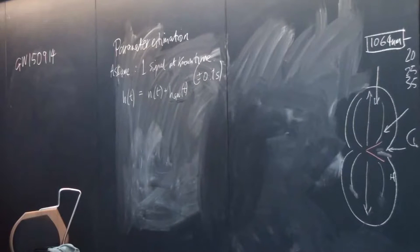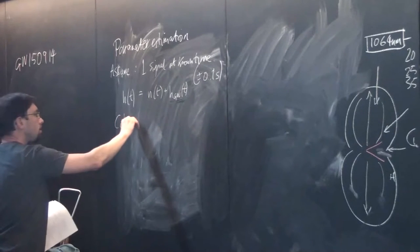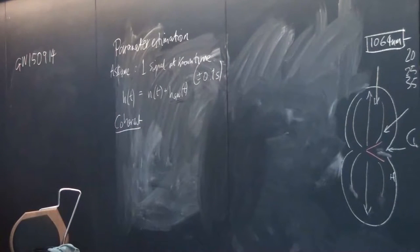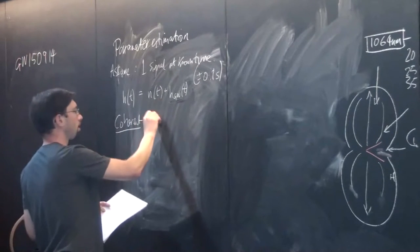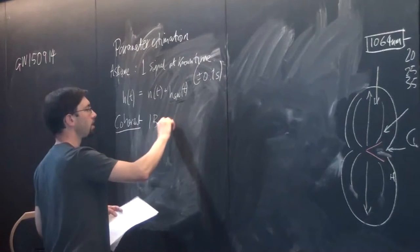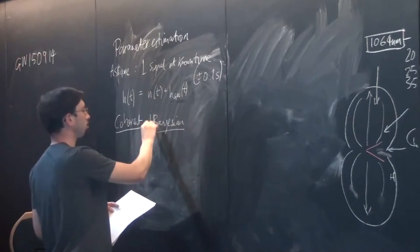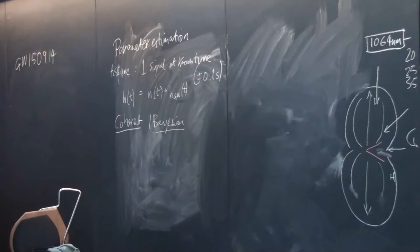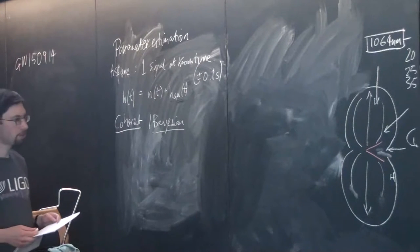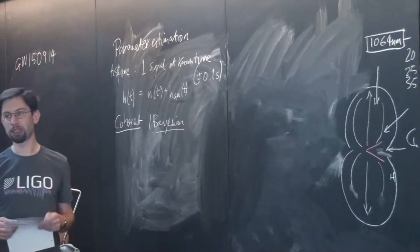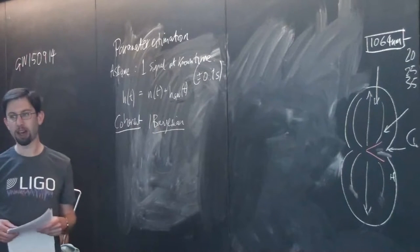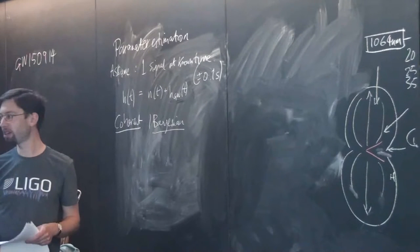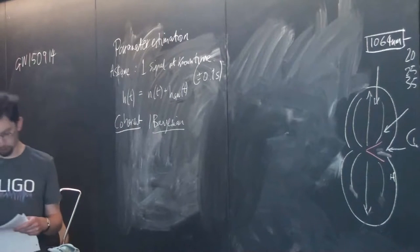This is different from the search algorithm in a number of ways. Coherent analysis means you analyze all the detectors at once. The goal is not just to find the signal, but to have the most accurate and unbiased estimates of what its parameters are.